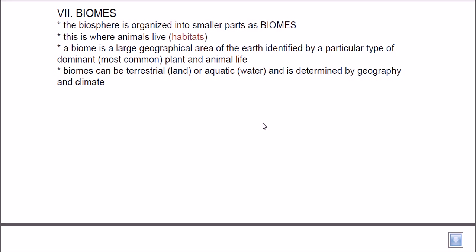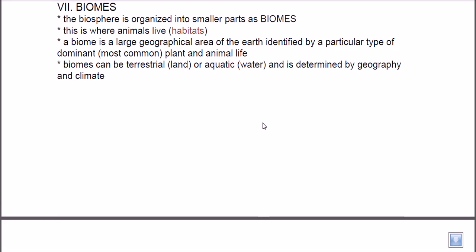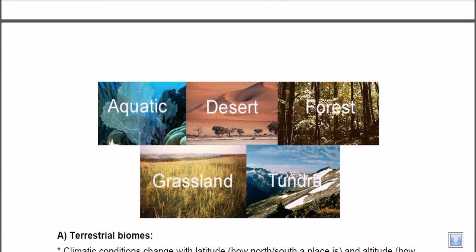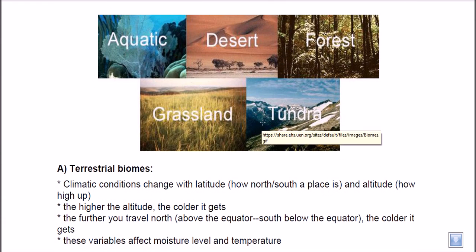Biomes are divided into two parts: one is terrestrial, meaning land biomes, and another is aquatic, meaning biomes consisting of water or water ecological systems. Biomes are determined by geography and climate — these two things are the driving forces in making a biome and supporting life diversity inside it. Geography and climate together determine the ecosystem characteristics of each region.